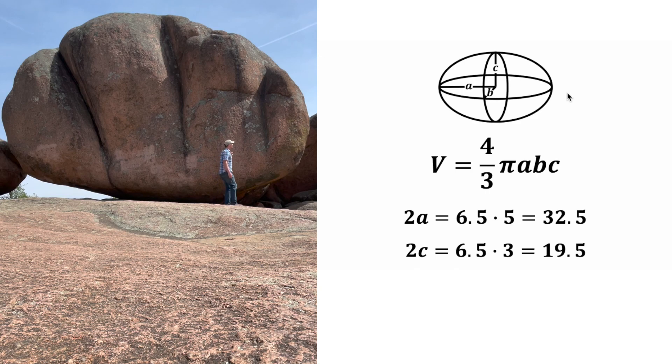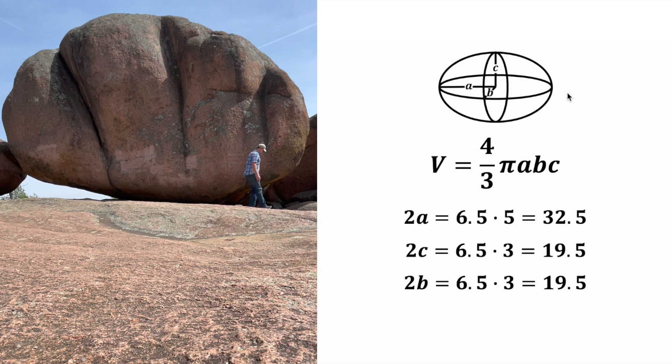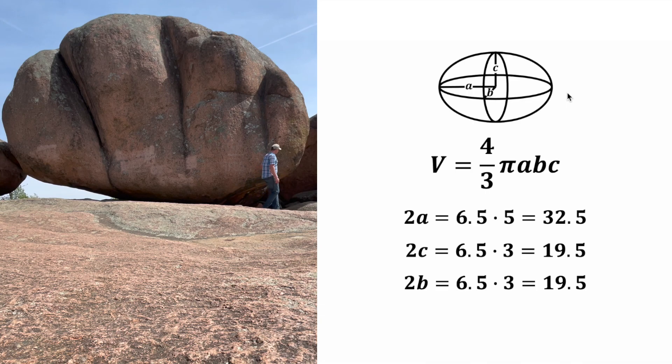I think the depth is about the same as the height. So 2B will also be equal to 6.5 times 3, or 19.5.